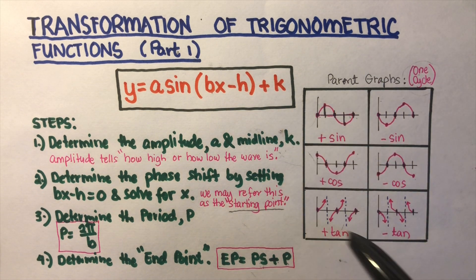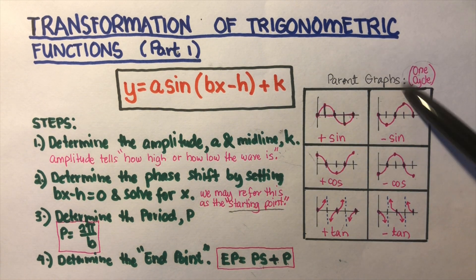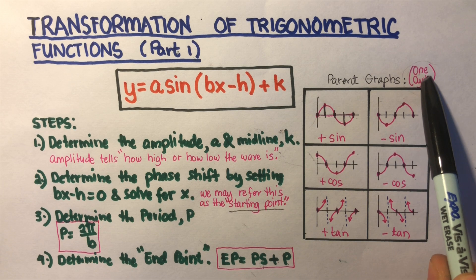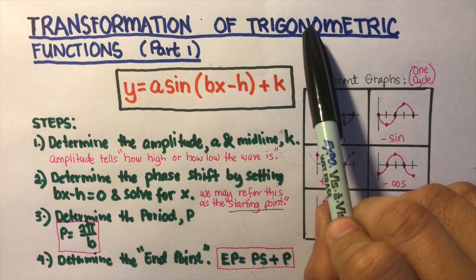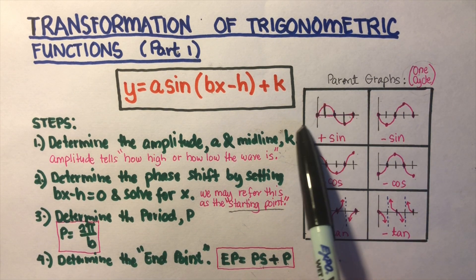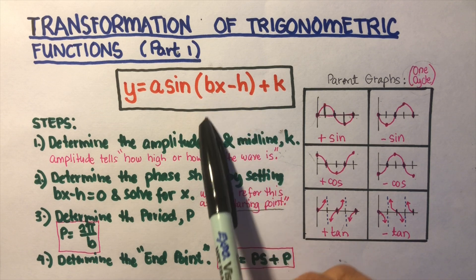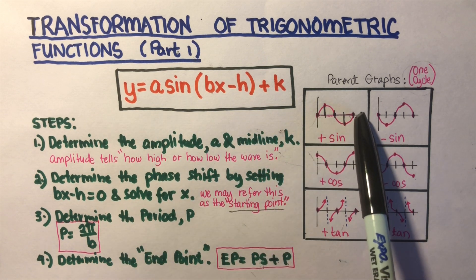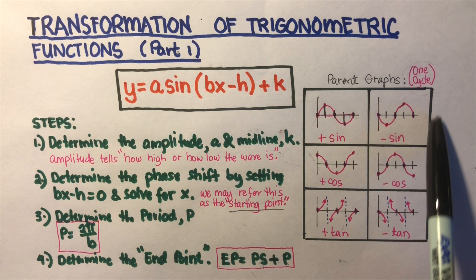On this side we have the parent graph. The parent graph is only one cycle. Please remember that for trigonometric functions, it's going to go to infinity — the cycle is going to go to infinity on one side and on the other side.